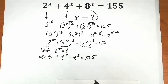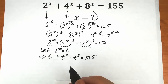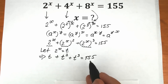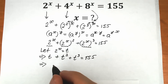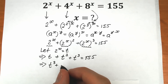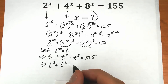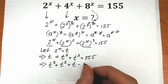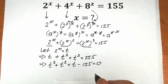This is our expression after substitution. If we change the order a little bit and bring 155 from right to left, we get the cubic equation: t cubed plus t squared plus t minus 155 equals zero.